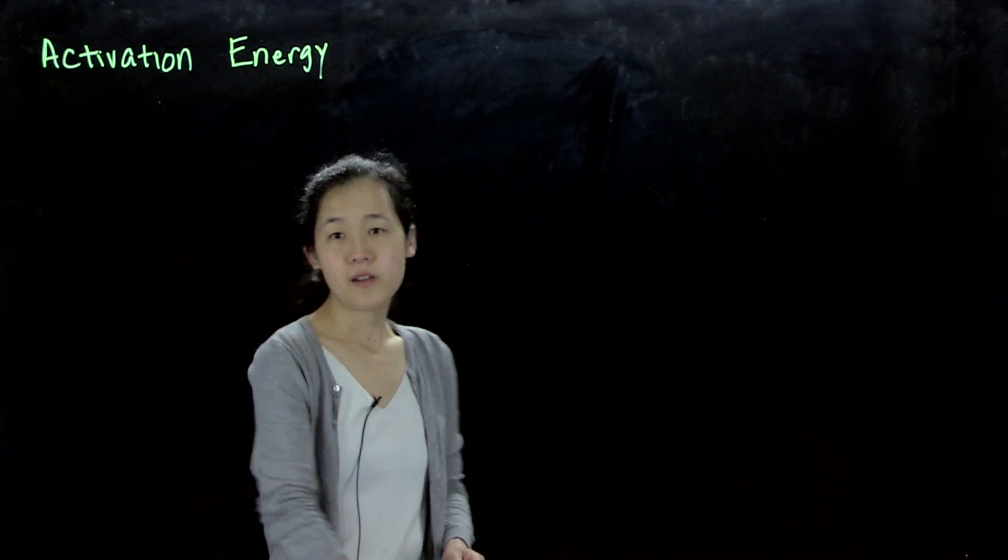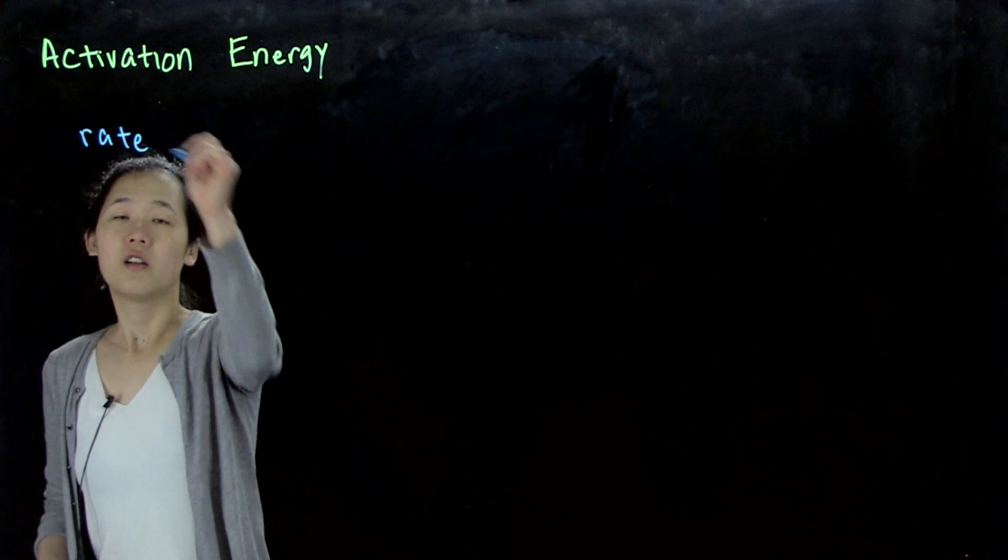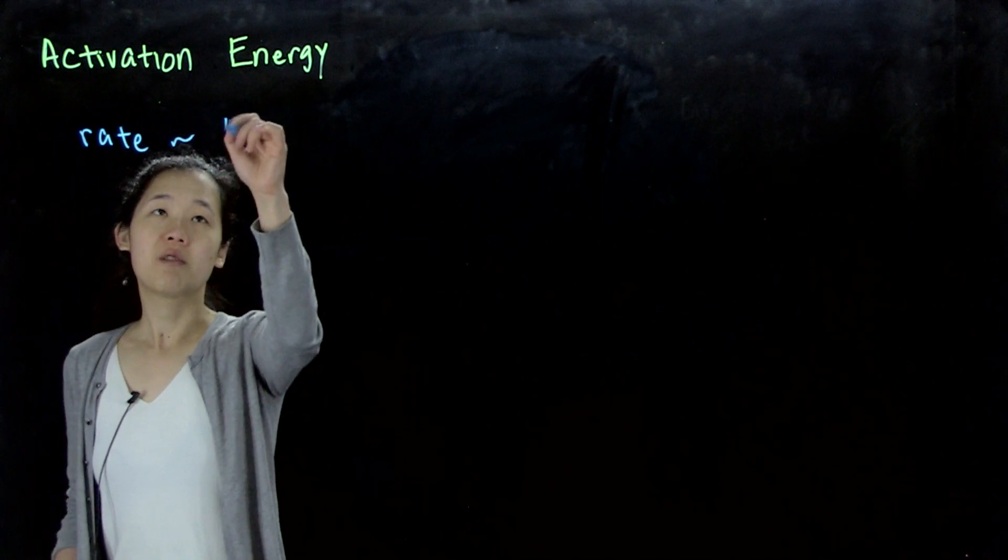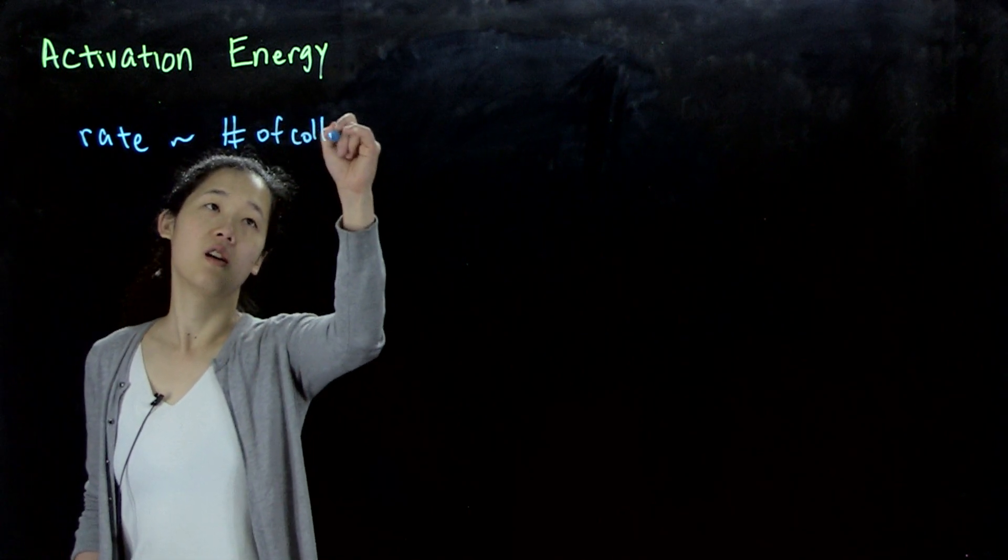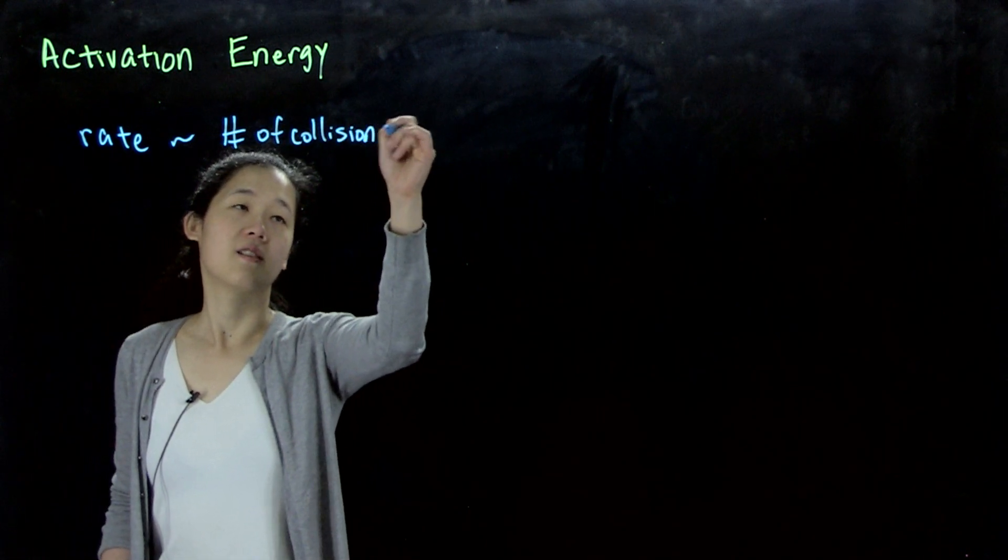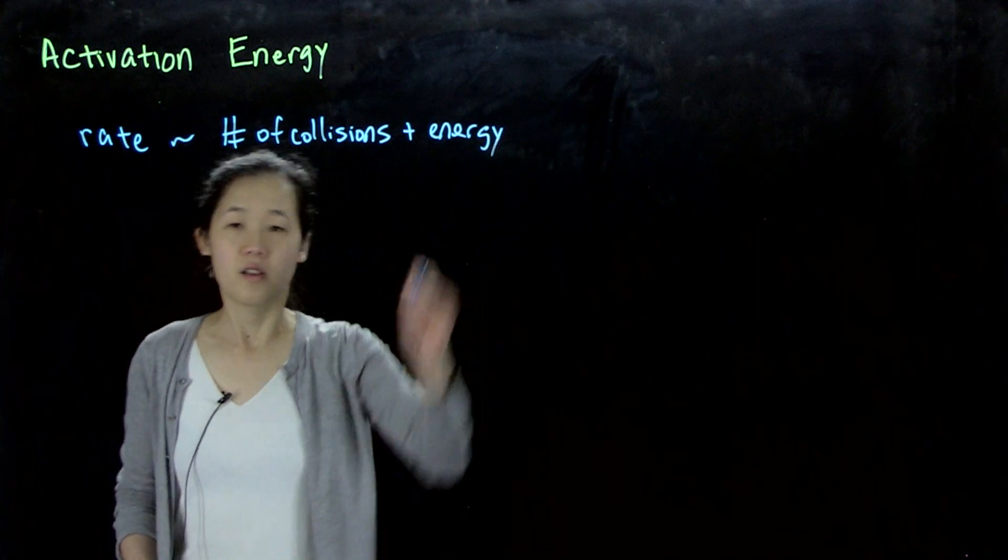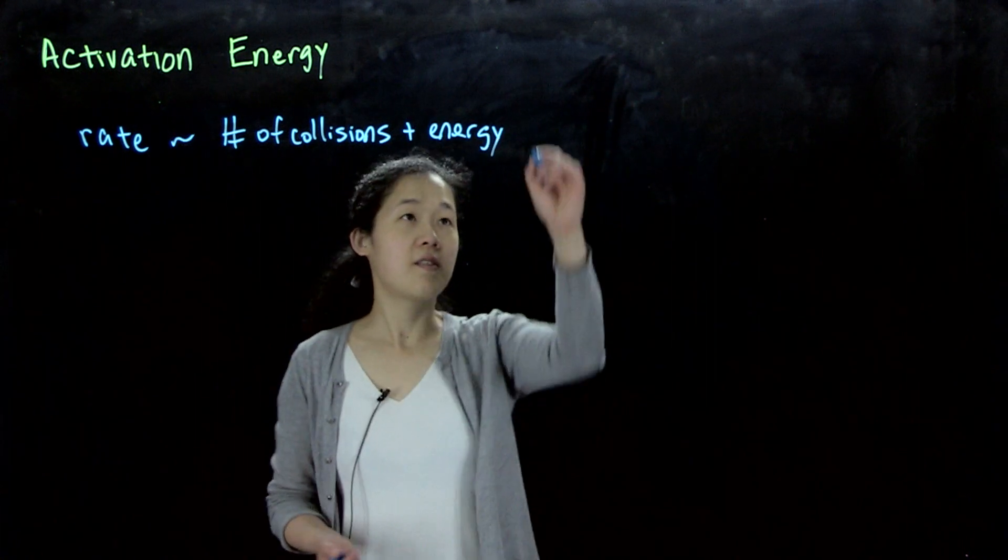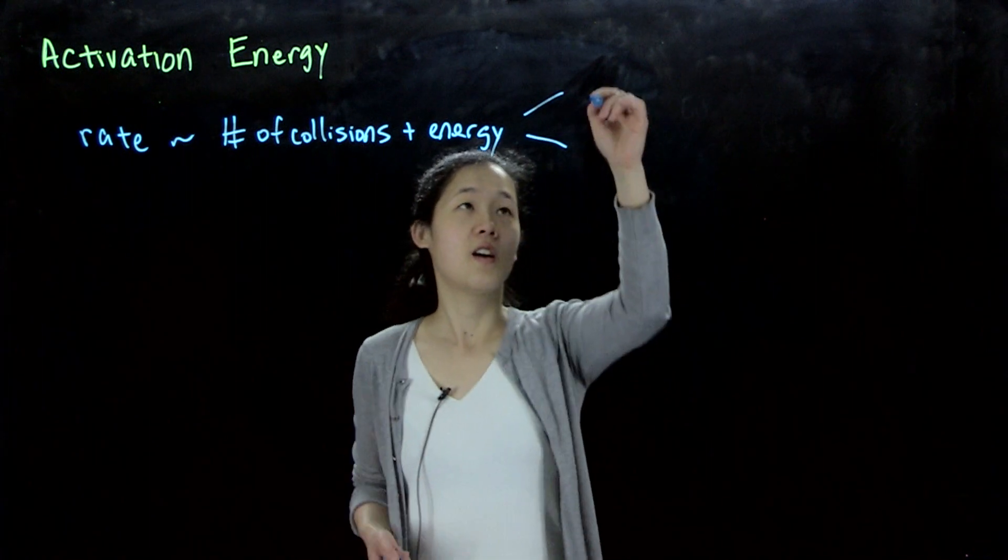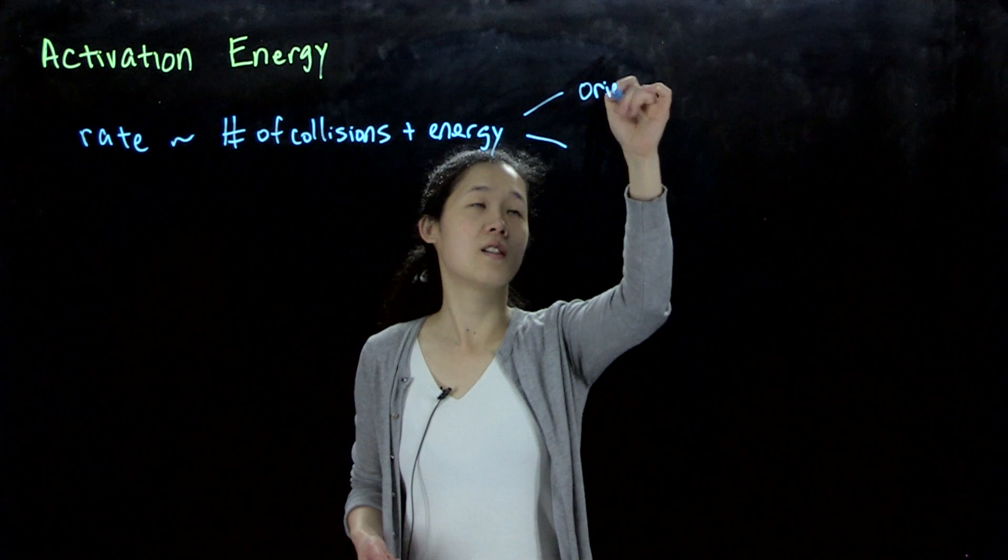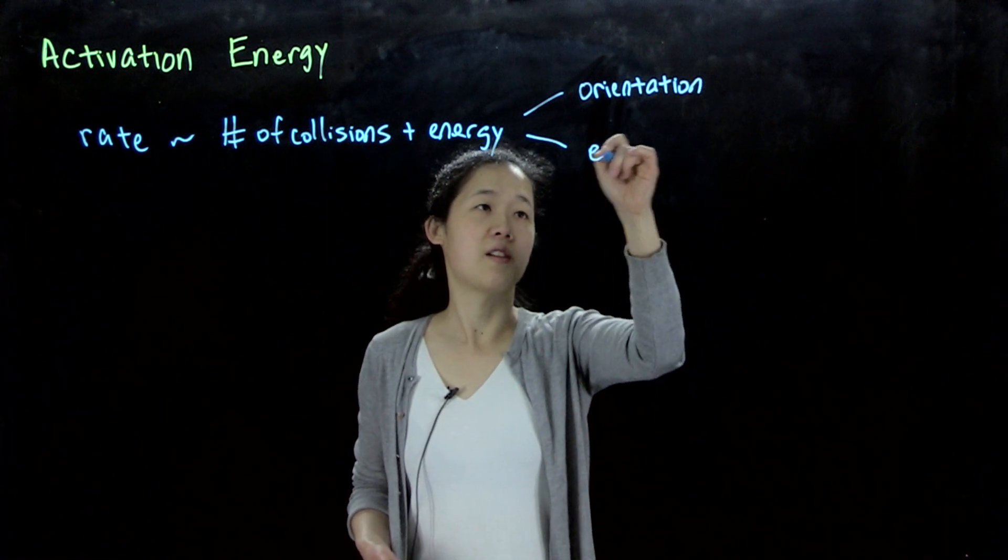OK, so we've said before that factors that govern reaction rate are basically the number of collisions that might happen and how frequent they are, and the energy. So the energy of the molecules. This tells us whether the molecules when they're bumping into each other have the right orientation and then the right amount of energy.